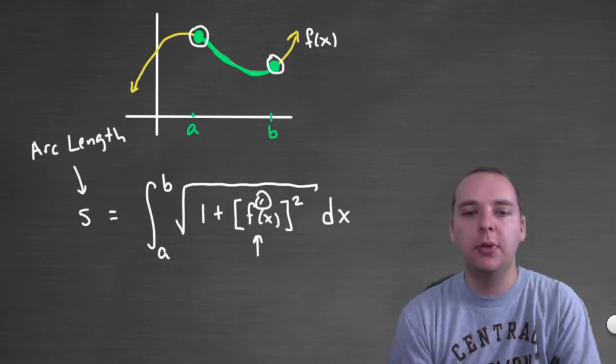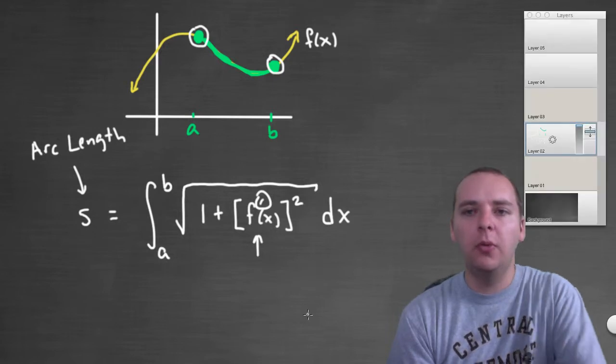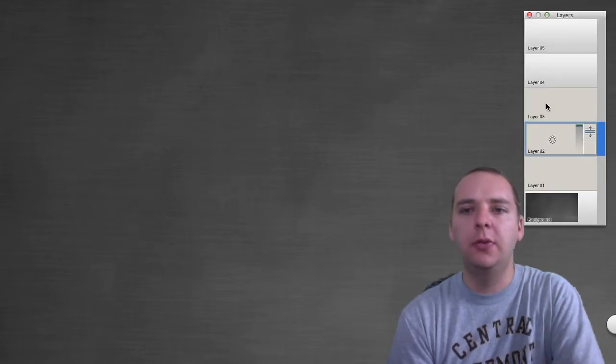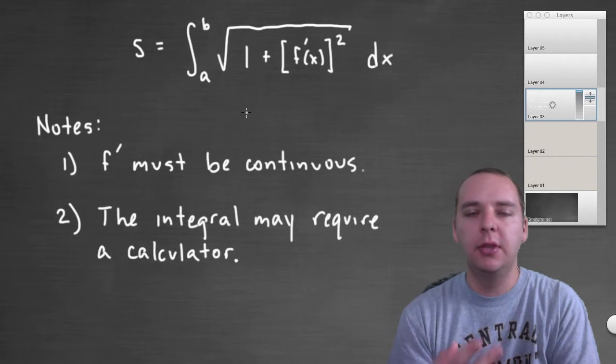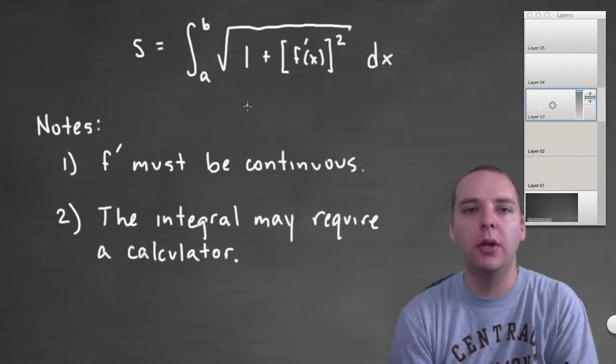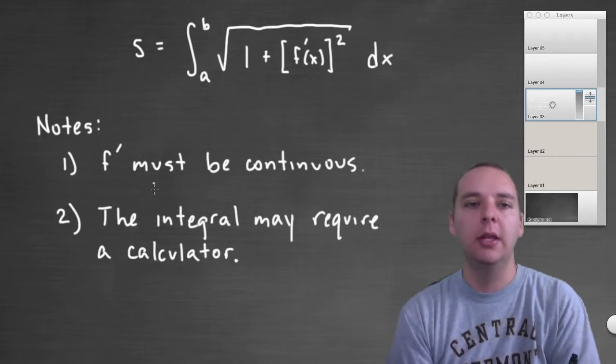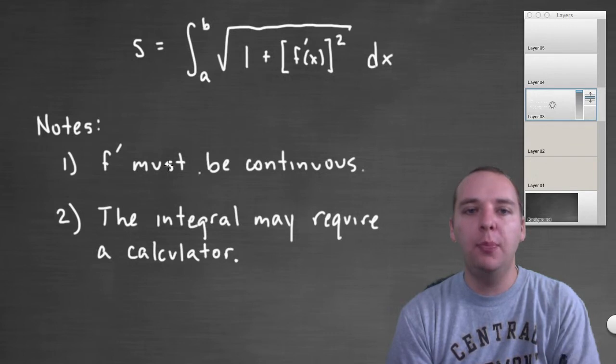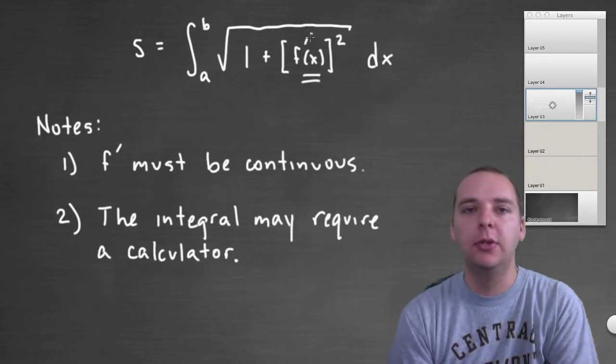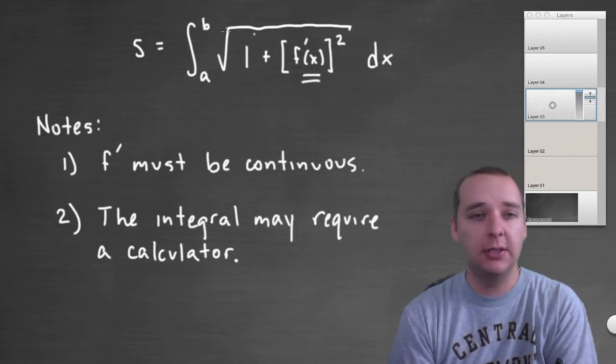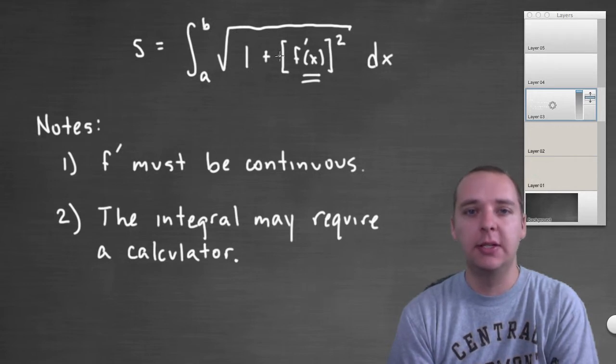Now there are a couple things that we need to remember, so I jotted down a few quick notes. Here's two things in particular that are important to remember when you're doing an arc length problem. Number one, f prime needs to be continuous. If the derivative is not a continuous function, then this whole process doesn't really work.